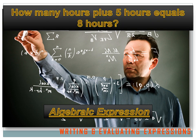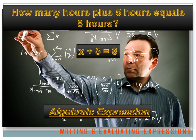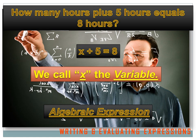Let's look at an example. Let's say you were given the expression: how many hours plus five hours equals eight hours? Here's how you'd turn that into an algebraic expression. 'How many hours?' is what we're trying to find out — that's the unknown number, so we'll call it X. X plus five hours equals eight hours, or X plus five equals eight. We call X the variable. The variable is the unknown number in an algebraic expression — it could be X, Y, Z, A, B, C. It's the variable.